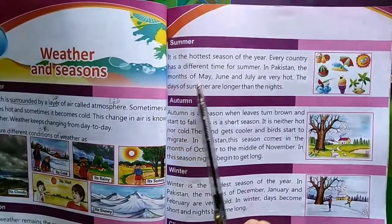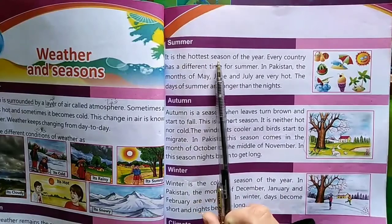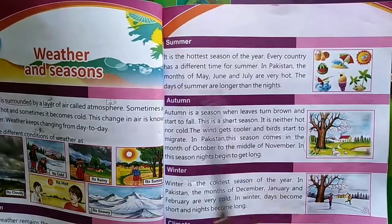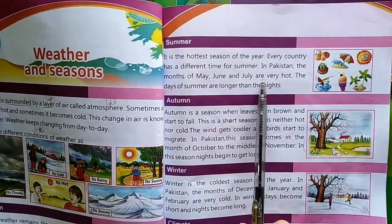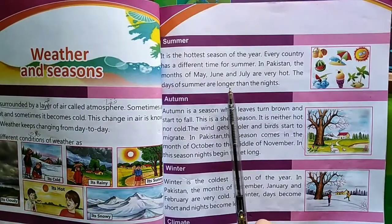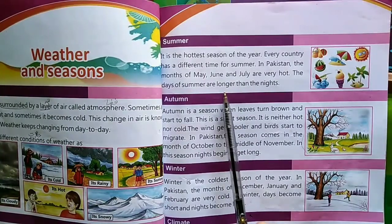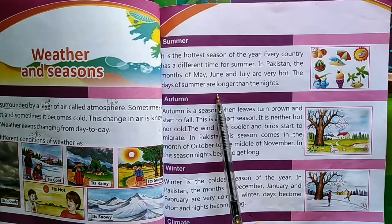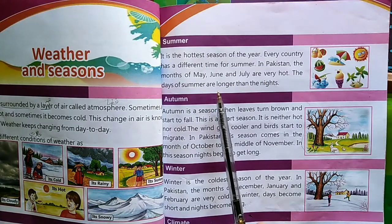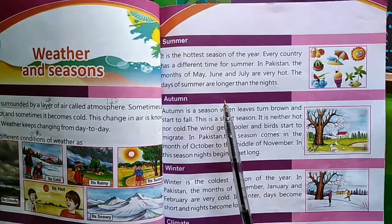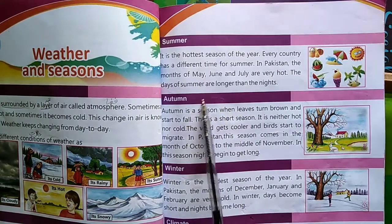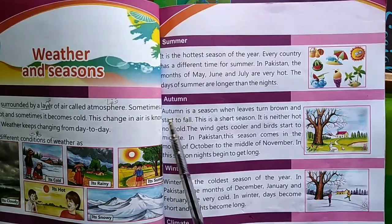The second season is summer. It is the hottest season of the year. Every country has a different time for summer. In Pakistan, the months of May, June and July are very hot. The days of summer are longer than the nights. موسم گرما یہ سال کا گرم ترین موسم ہوتا ہے۔ پاکستان میں May، June اور July بہت گرم مہینے ہوتے ہیں اور گرمیوں کے دن راتوں کی نسبت بڑے ہوتے ہیں۔